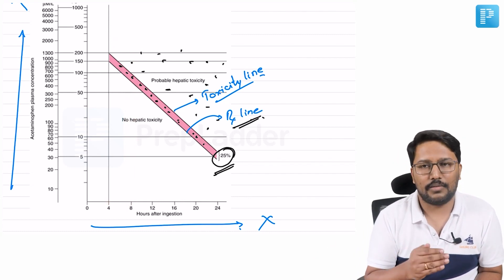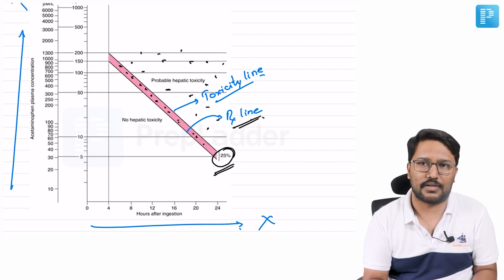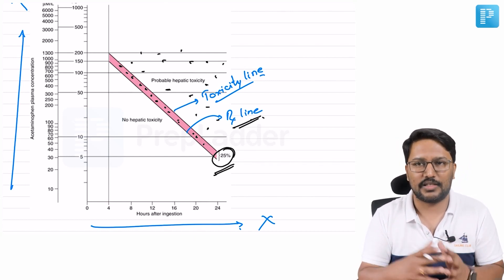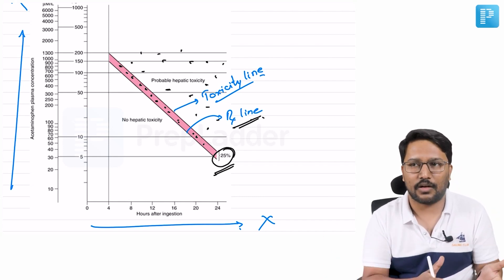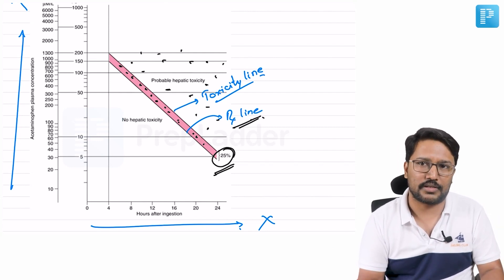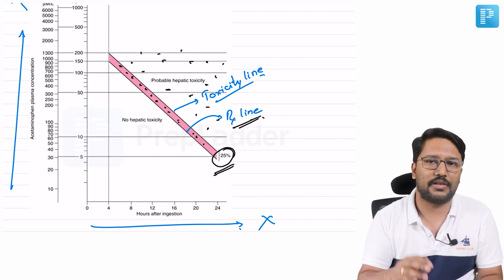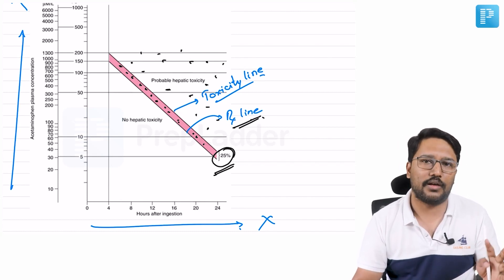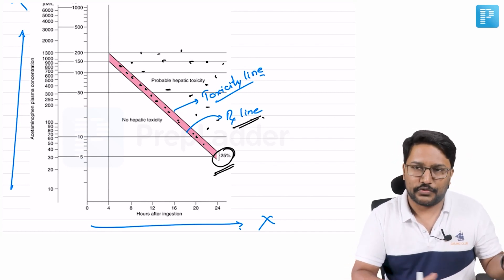The earliest we can interpret paracetamol levels is four hours after presentation. If the patient presents within four hours, do all basic steps: stomach wash if within one hour, secure IV cannula, stabilize, administer IV fluids, baseline LFTs and creatinine. Then wait until four hours have elapsed since consumption before drawing serum paracetamol levels.